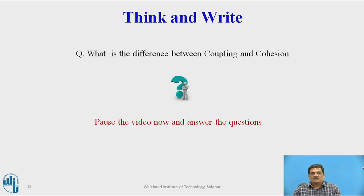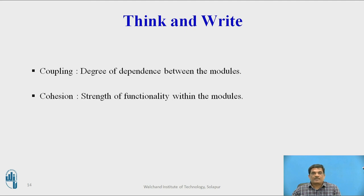Think and write: What is the difference between coupling and cohesion? Pause the video now and answer the question. Coupling is a degree of dependency between the modules. Cohesion is the strength of functionality within the module. Coupling is an intermodular property and cohesion is an intramodular property. Coupling defines the strength of connection between modules, while cohesion defines the strength of elements within a module.